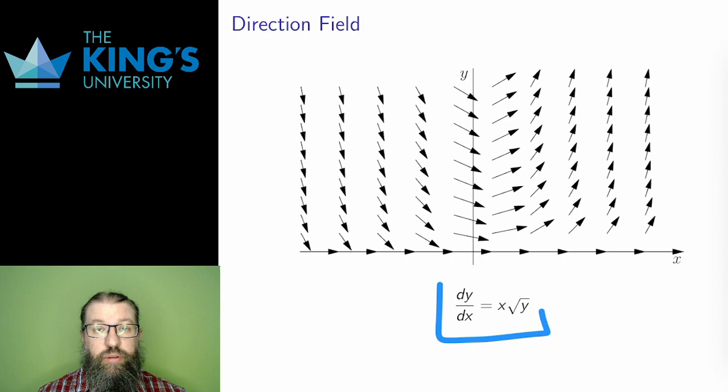Here's another direction field. This is only defined for positive y because of the square root. The slope is given by the x-coordinate times the root of the y-coordinate. And feel free to check at any of these points. At 2, 4, I get a slope of 4. At negative 1, 1, I get a slope of negative 1, so forth, and so on. Just by putting the coordinates into this x-root-y expression, I get a slope at each coordinate.